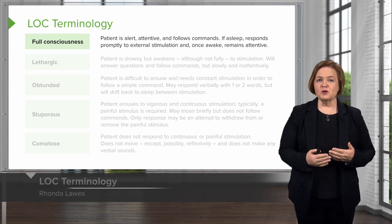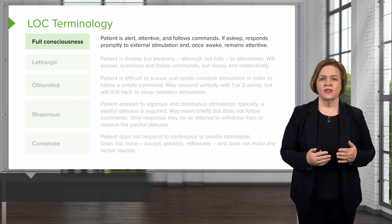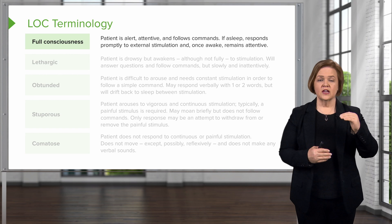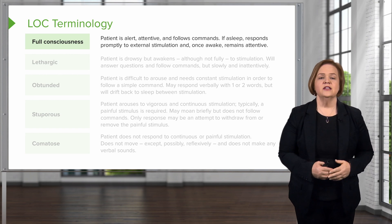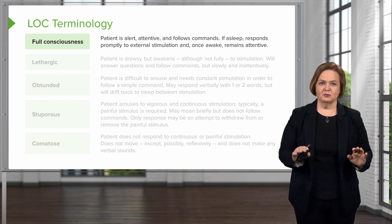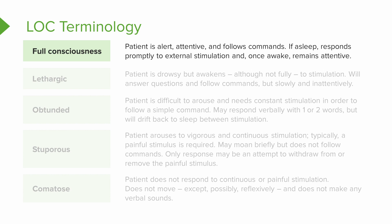Now I'm going to go through some of the terminology. We use lots of different terminology with level of consciousness, from full consciousness down to comatose. If somebody is fully conscious — that should be you on a good day, not after a big nursing school exam — you're alert, attentive, and can follow commands. If you're asleep, you'd wake up pretty quickly, follow what someone asked you to do, and be able to stay awake. That's your everyday person walking through everyday life.